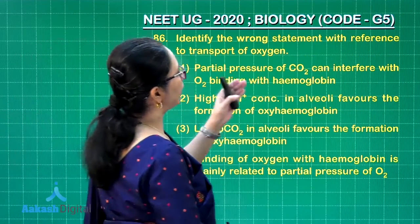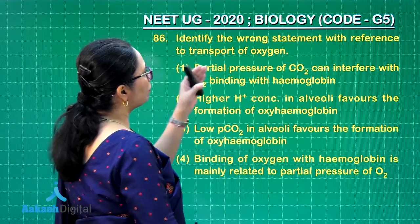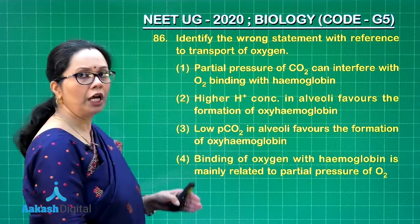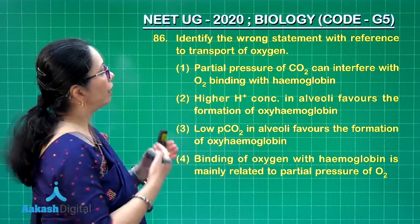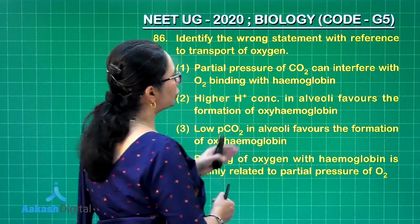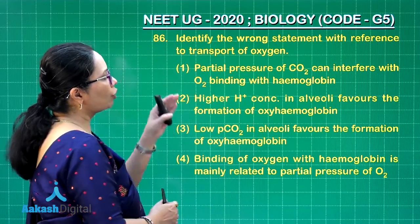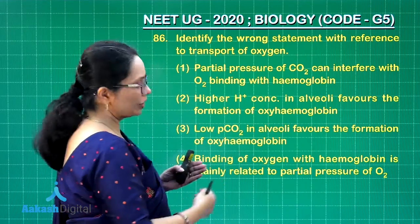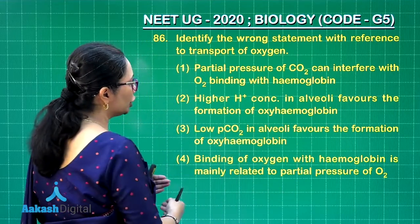Question 86: identify the wrong statement with reference to transport of oxygen. Partial pressure of CO2 can interfere with O2 binding with hemoglobin — that is true, because if CO2 is higher it will be competing and binding with hemoglobin. Higher H+ ion concentration in alveoli favors the formation of oxyhemoglobin — now this is incorrect; rather, oxyhemoglobin easily releases H+ ions. Low PCO2 in alveoli favors the formation of oxyhemoglobin — that is correct.